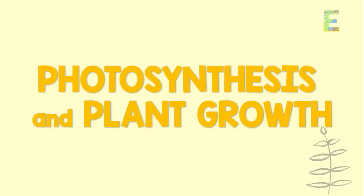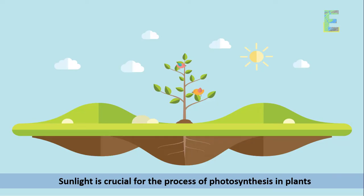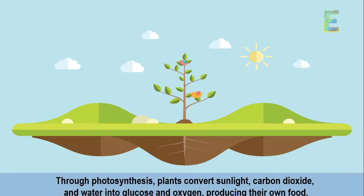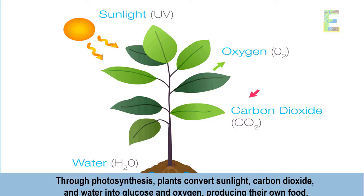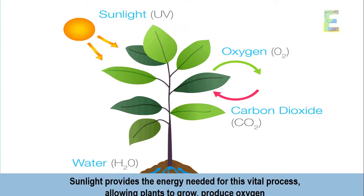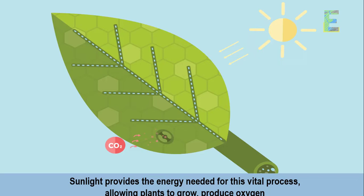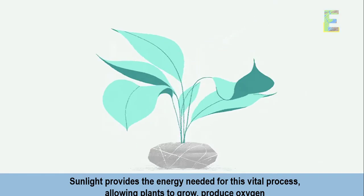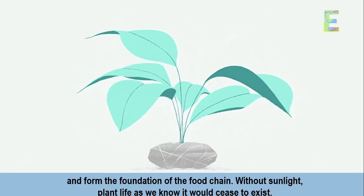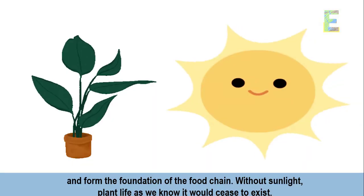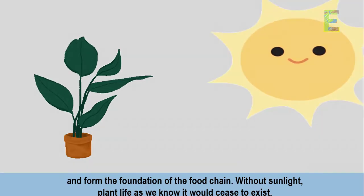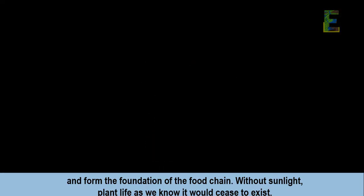Photosynthesis and Plant Growth. Sunlight is crucial for the process of photosynthesis in plants. Through photosynthesis, plants convert sunlight, carbon dioxide, and water into glucose and oxygen, producing their own food. Sunlight provides the energy needed for this vital process, allowing plants to grow, produce oxygen, and form the foundation of the food chain. Without sunlight, plant life as we know it would cease to exist.